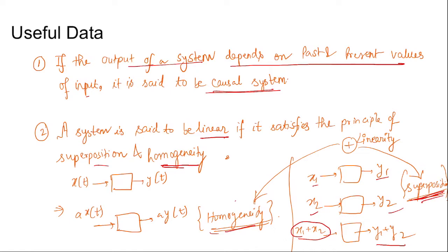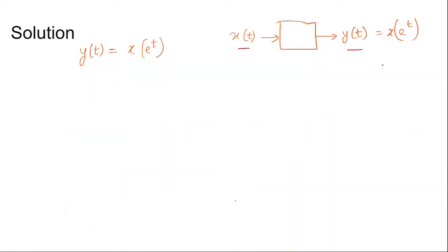When both homogeneity and superposition are satisfied, the system is linear. For x(t) input, y(t) is x(e^t). Now if we try to find y(0), it will be x(e^0) which is x(1). So we see the present value of output depends on the future value of input.